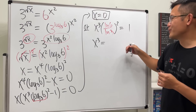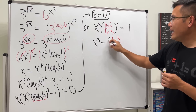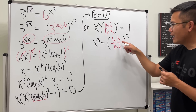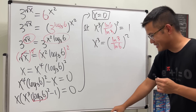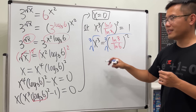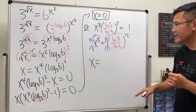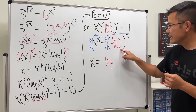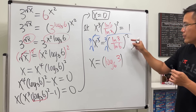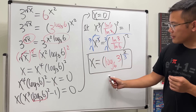Dividing both sides, x cubed equals the reciprocal, which is (ln 3 over ln 6) squared — and the square stays positive since we took the reciprocal inside. Taking the cube root of both sides (no plus or minus needed for cube roots), we get x equals (ln 3 over ln 6) to the power 2/3, which is the same as (log base 6 of 3) to the power 2/3.